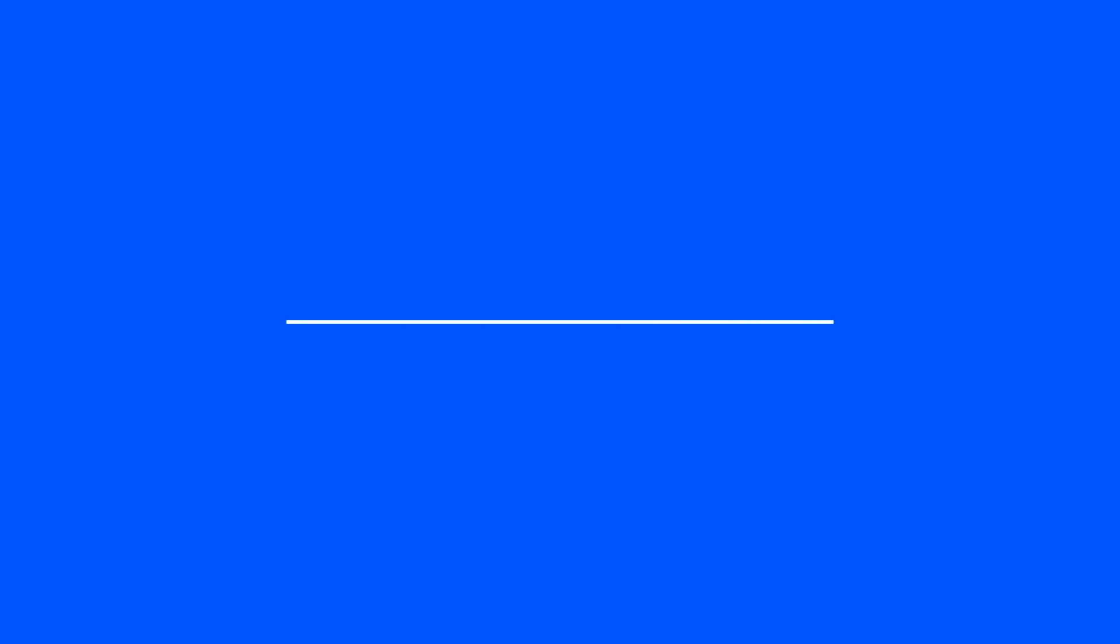Point number two is you need to set a minimum acceptable cash flow. This is another investment criteria that should be written down and you never really move away from it unless you've really thought about it. Personally, I will not buy an investment property if it does not have a stabilized cash flow of at least $100 per unit. So say I buy a four plex, I need to see that I have $400 a month in cash flow minimum.